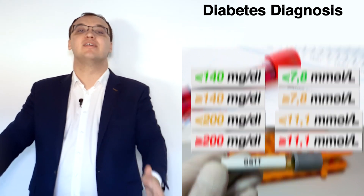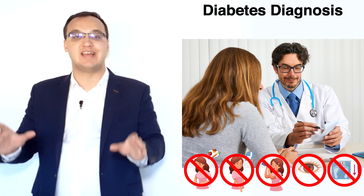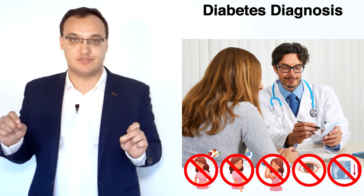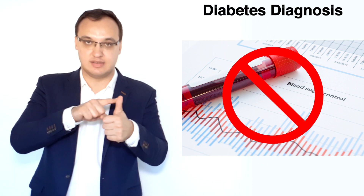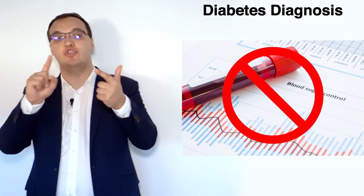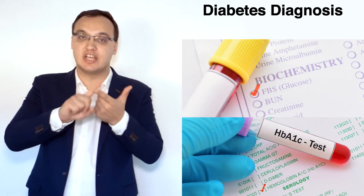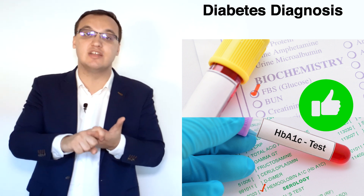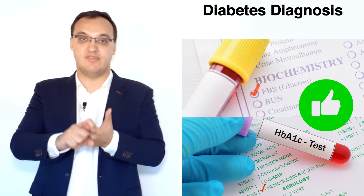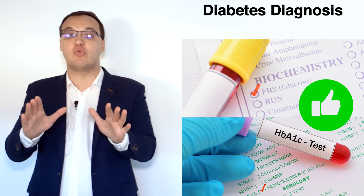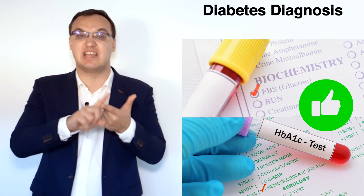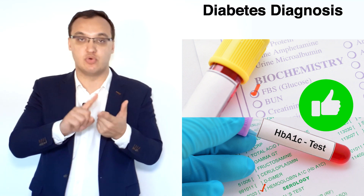Remember: most patients with diabetes mellitus do not have symptoms, so we don't usually use the first diagnostic option. We usually use the second one — fasting plasma glucose plus HbA1c — because it's the most convenient and as sensitive as OGTT. If you want to memorize values, memorize the second one; that's the most important one. Thank you very much for listening. Bye-bye, take care.